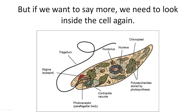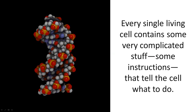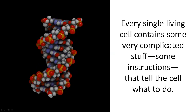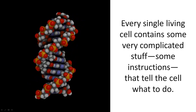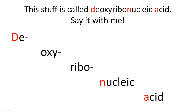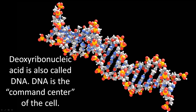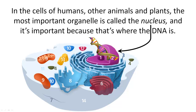But if we want to say more, we need to look inside the cell again. Every single living cell contains some very complicated stuff — some instructions that tell the cell what to do. This stuff is called deoxyribonucleic acid. Say it with me: de-oxy-ribonucleic acid. Deoxyribonucleic acid is also called DNA. DNA is the command center of the cell. In the cells of humans, other animals, and plants, the most important organelle is called the nucleus, and it's important because that's where the DNA is.